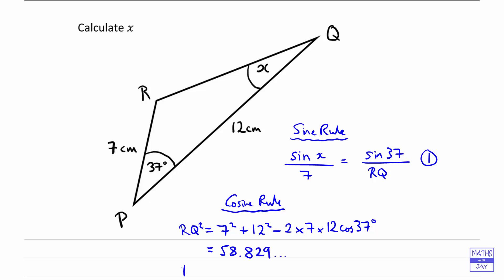and then square rooting that value on the calculator will give us 7.6700. So now that we've found RQ,